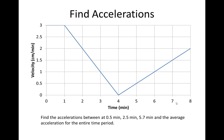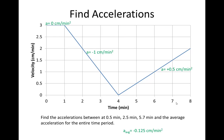Find the accelerations at 0.5 minutes, 2.5 minutes, and 5.7 minutes, and the average acceleration for the entire period. So there are your three accelerations: 0 centimeters per minute squared, then negative 1 centimeter per minute squared, and plus 5 centimeters per minute squared. For the whole interval, you have a change in velocity of negative 1 centimeter per minute divided by 8, which is negative 0.125 centimeters per minute squared — just finding slopes of line segments or slopes of tangent lines, just like in position time graphs.